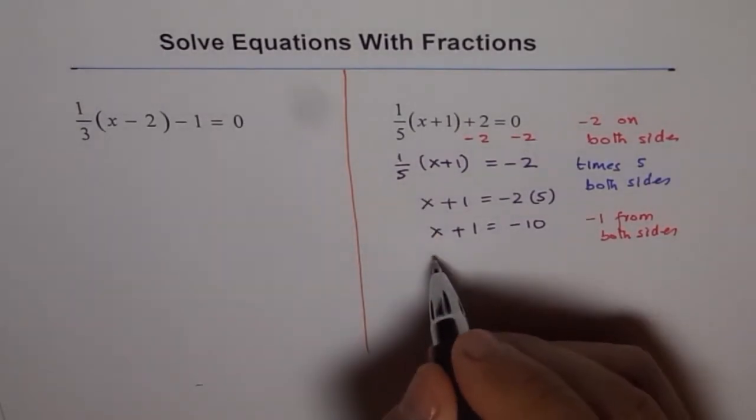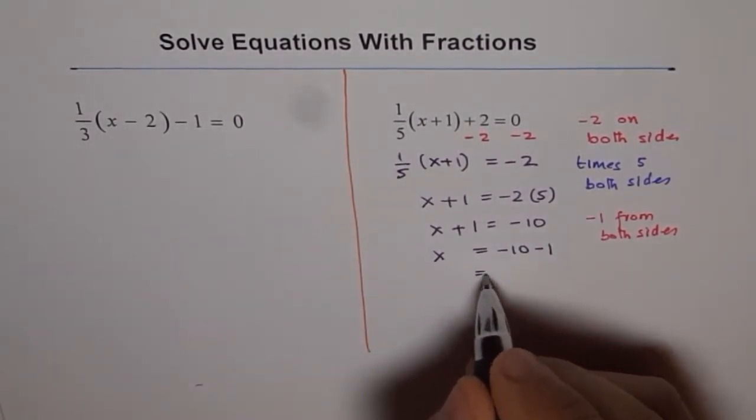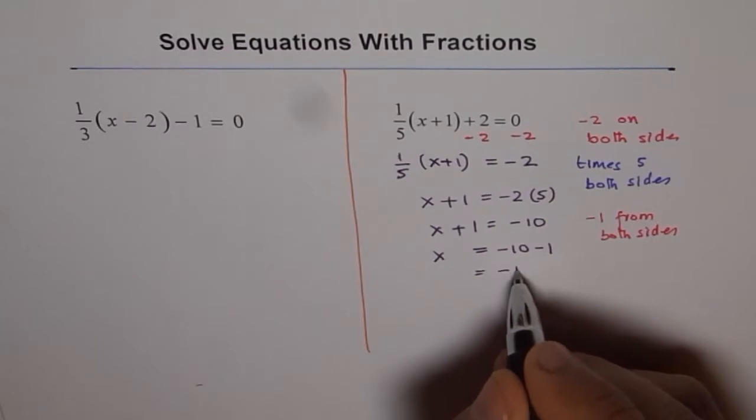So if you do that, then you get x equals to minus 10 minus 1. And what is minus 10 minus 1? It is minus 11.